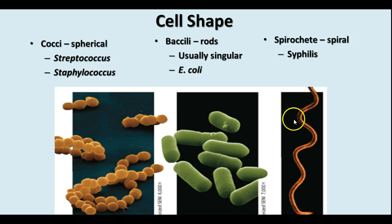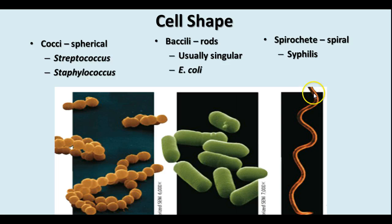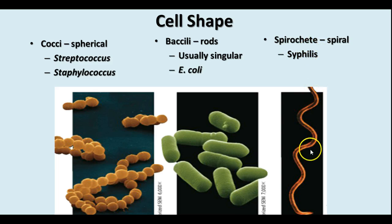The spiral shapes — the spirilla and spirochetes — are usually singular and are not as common as the other two. An example is the bacterium Treponema pallidum, which causes syphilis.